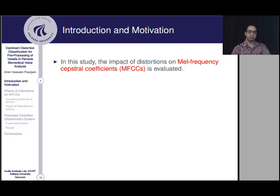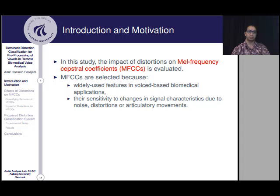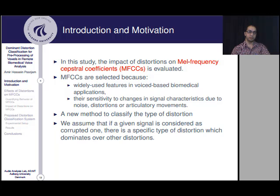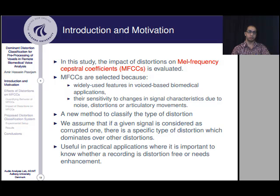In this study, we evaluate the impact of distortions on MFCCs. These features have been selected because they are widely used in voice-based biomedical applications, and because they are sensitive to changes in signal characteristics due to noise, distortion, or articulatory movement. Then, motivated by the experimental observations, we propose a new method to classify the type of distortion in vowels, assuming that if a given signal is considered corrupted, there is a specific type of distortion which dominates over others — useful in practical applications where it's important to know whether a recording needs enhancement.